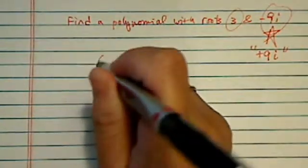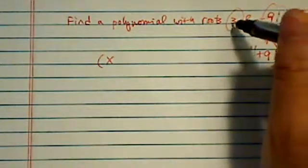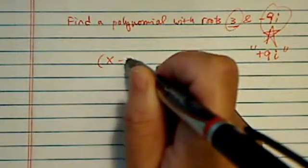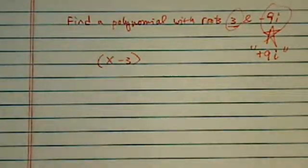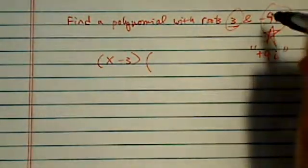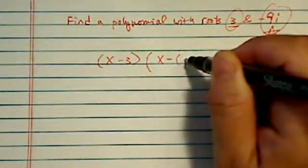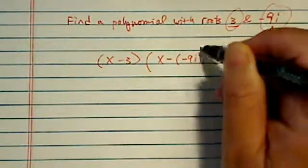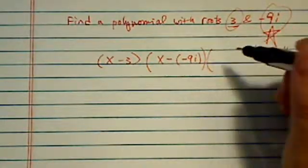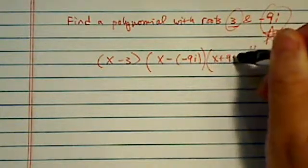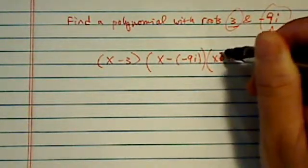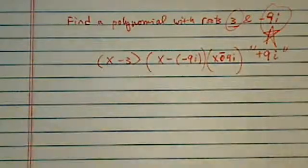So let's write it in a root format. If 3 is a root, then x minus 3 is a factor to this polynomial. And then x minus 9i is also a factor. And then x plus 9i, the positive 9i, is also a factor.